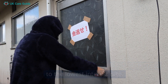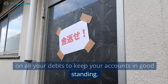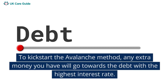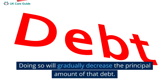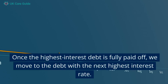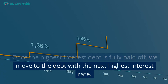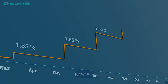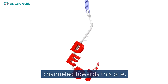Next, you'll continue making minimum payments on all your debts to keep your accounts in good standing. To kickstart the Avalanche Method, any extra money you have will go towards the debt with the highest interest rate. Doing so will gradually decrease the principal amount of that debt. Once the highest interest debt is fully paid off, we move to the debt with the next highest interest rate. The money allocated for the previous debt is now channeled towards this one.